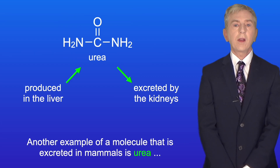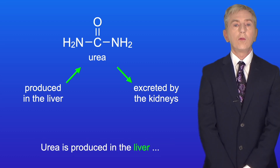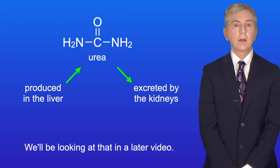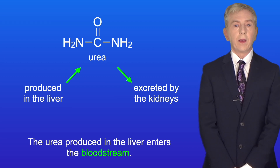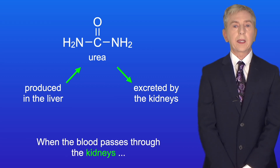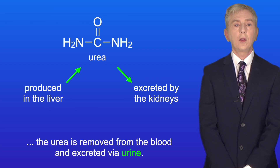Another example of a molecule that's excreted in mammals is urea, which I'm showing you here. Urea is produced in the liver during the breakdown of excess amino acids, and we'll be looking at that in a later video. The urea produced in the liver enters the bloodstream, and when the blood passes through the kidneys the urea is removed from the blood and excreted via urine.